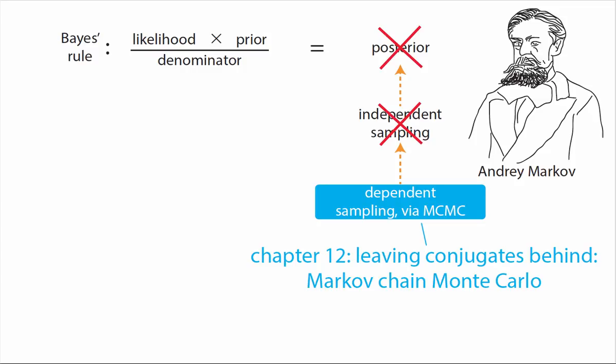We also discuss the cost of doing dependent sampling versus independent sampling. Independent sampling is the most efficient way of understanding a distribution, and it turns out that dependent sampling, where the next value depends on the current value, is less efficient. So we discuss the concept of effective sample size.